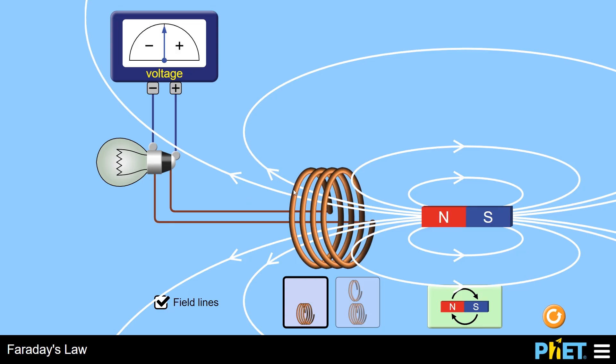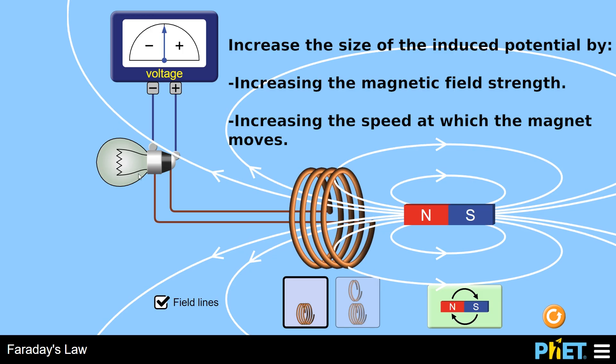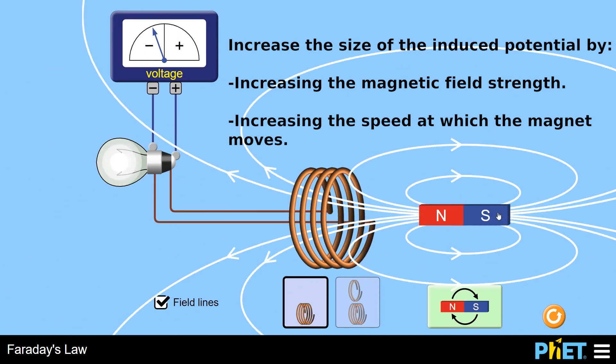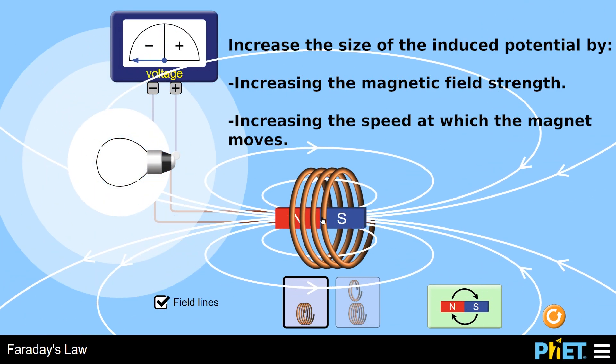Now I can increase the size of the voltage generated by making the magnet stronger. If I made the magnet stronger, then this bulb will go brighter and this voltage meter will indicate a larger voltage. I can also move it through faster as well. So if I move it through faster, then a larger voltage will be generated.